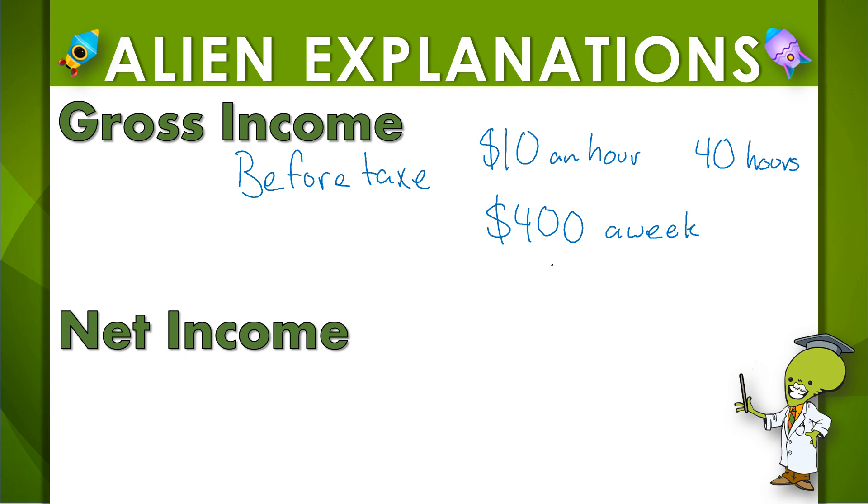And that is based off of a percentage. So, out of this $400, there might be $80 that come out for income tax. So, minus $80 for income tax.